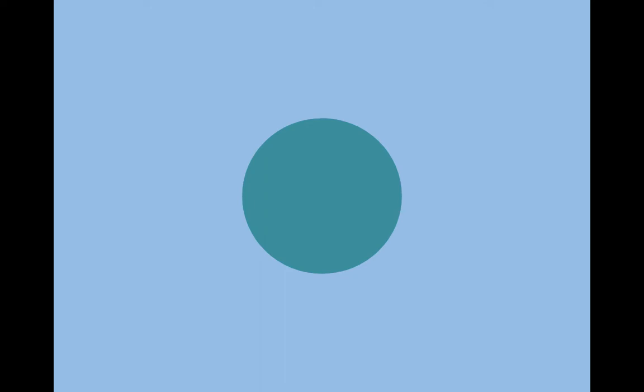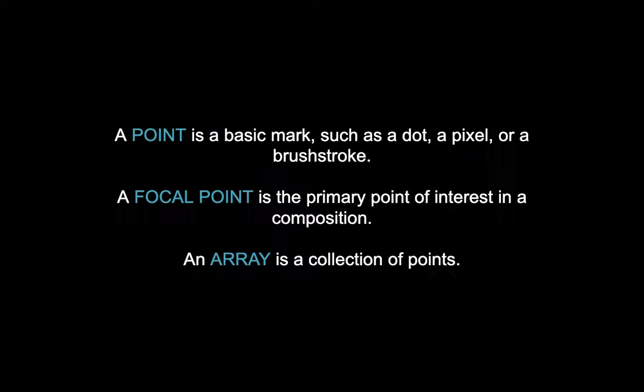The point is the first and simplest element of visual design. With the addition of even one mark on a blank page, the brain immediately begins to create meaning from this point. We want to create relationships and establish order. If alone, the point serves as a point of orientation in relation to the outline of the page. Your eye will begin to make a connection and see a line if there are two points, and if there are three points, you will interpret them as a triangle. With your brain drawing the implied connections between the points, this compulsion to connect parts is described as a grouping. We have already been discussing how a point is a basic mark such as a dot, a pixel, or a brushstroke.